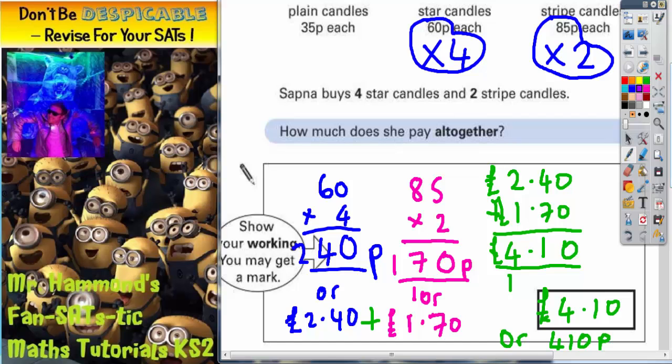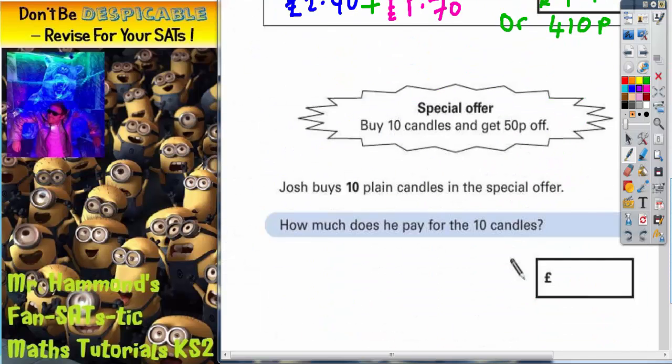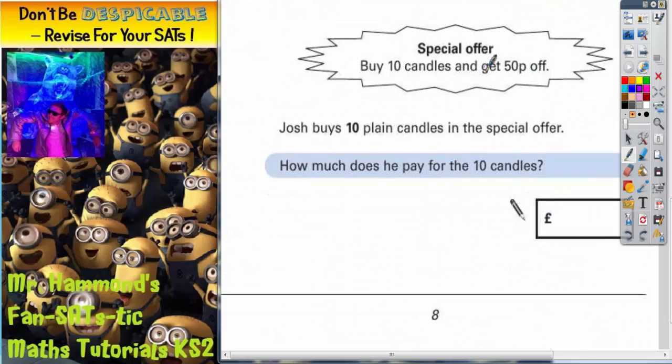Now let's scroll down and see what we're going to do for the second part of the question. Special offer: buy ten candles and get fifty pence off. Josh buys ten plain candles in the special offer. How much does he pay for the ten candles?